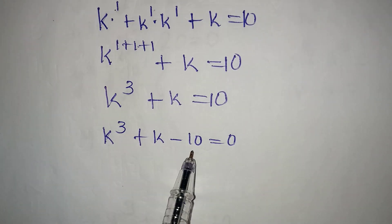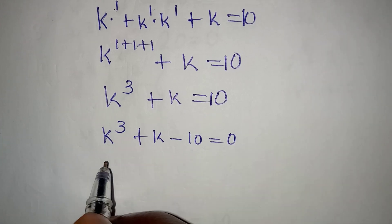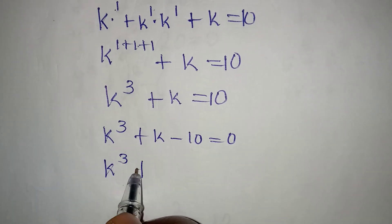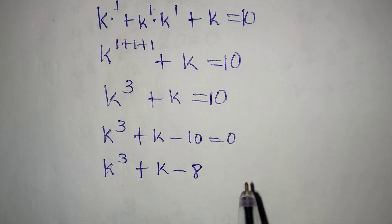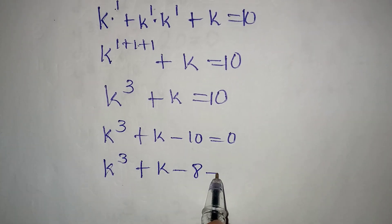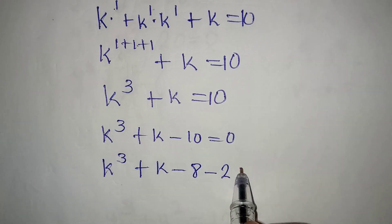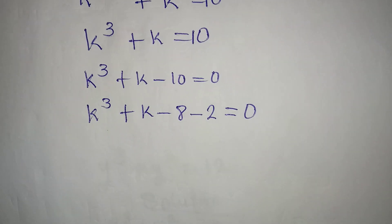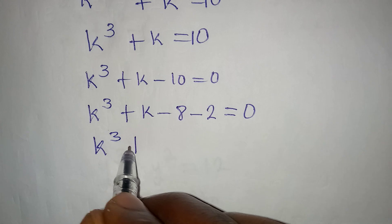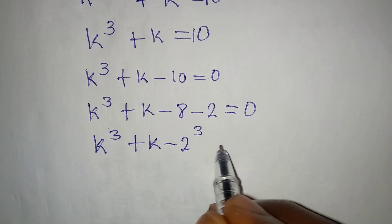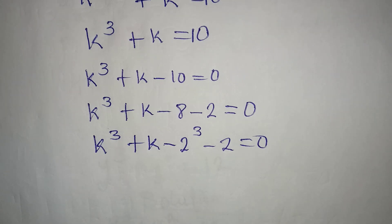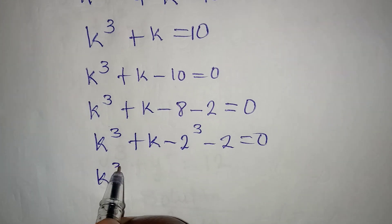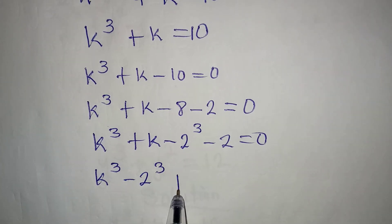Now we have k to the power of 3. Let's bring out a number from 10 that can be raised to the power of 3. So we have k to the power of 3 plus k minus 8 — because 8 can be raised to the power of 3 — then we have minus 2 remaining, equal to 0, because minus 8 minus 2 gives minus 10. Now 8 is 2 to the power of 3. Regroup: k to the power of 3 minus 2 to the power of 3, then plus k minus 2 equal to 0.